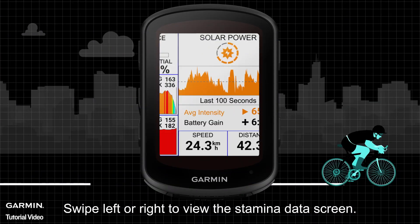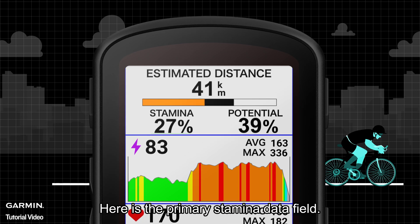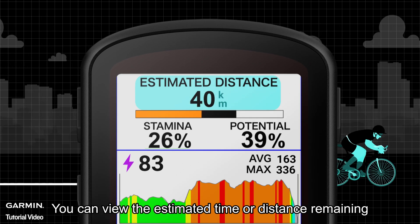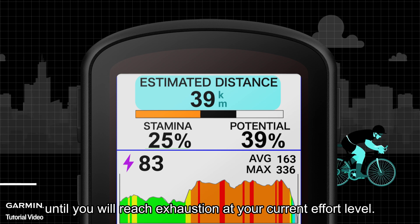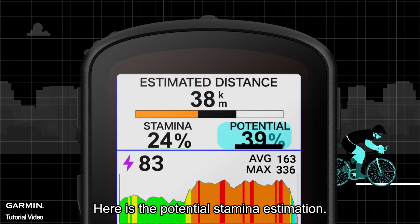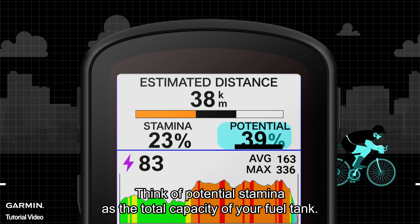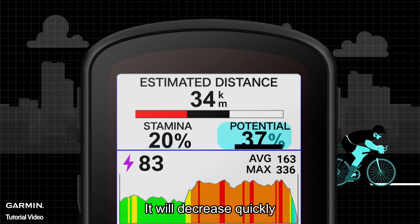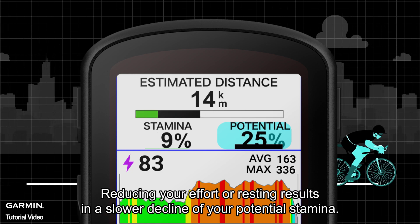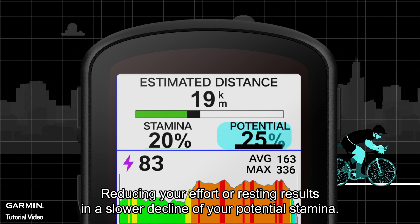Swipe left or right to view the stamina data screen. Here is the primary stamina data field, where you can view the estimated time or distance remaining until you reach exhaustion at your current effort level. Here is the potential stamina estimation — think of potential stamina as the total capacity of your fuel tank. It will decrease quickly if you are riding at a high effort level. Reducing your effort or resting results in a slower decline of your potential stamina.